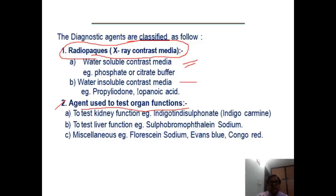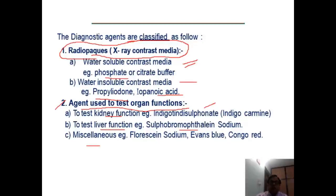The example of water-soluble contrast media is phosphate-citrate buffer. Similarly, the example of water-insoluble contrast media is propyliodone and iopanoic acid. Agents that are used to test organ functions are mainly used to test kidney function. For example, indigotine disulfonate, also known as indigo carmine, to test liver function. For example, sulfobromothalein sodium. And some are miscellaneous — for example, fluorescein sodium, Evans blue, and Congo red.